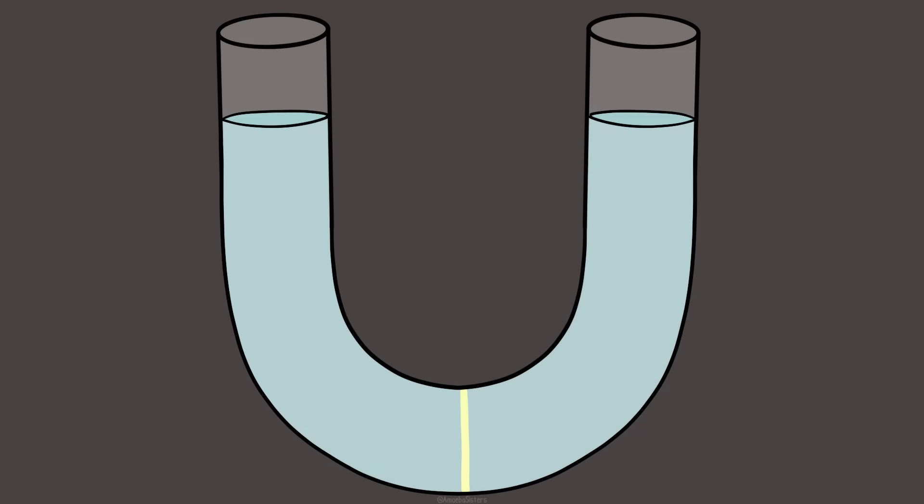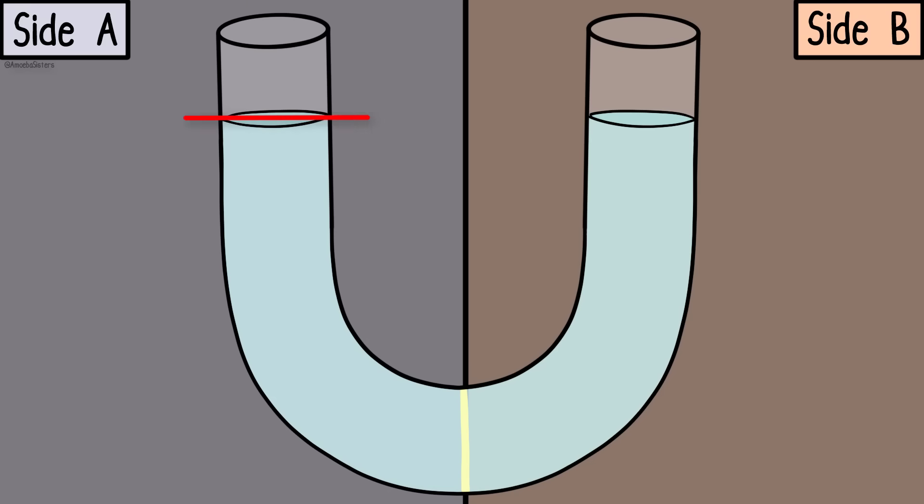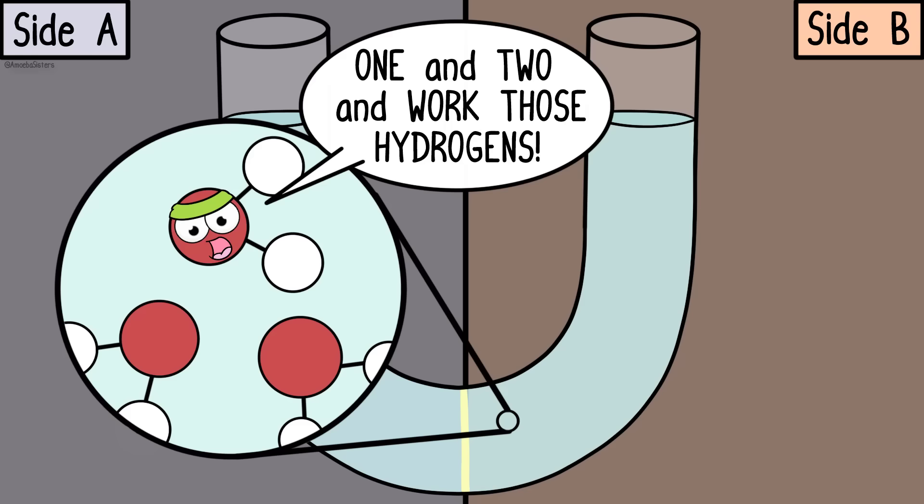Right now there's just water in this U-tube. The water levels on side A and side B are equal. That doesn't mean that the water molecules aren't moving. Water molecules like to move, but the net movement across the two sides is zero. That means the overall change in direction of movement is zero.